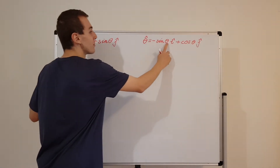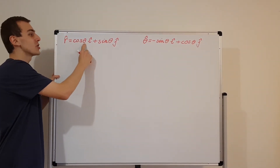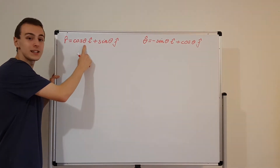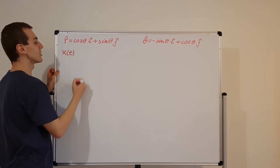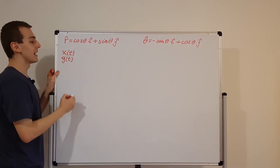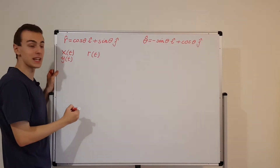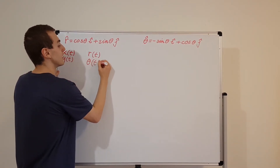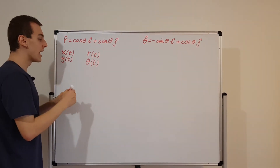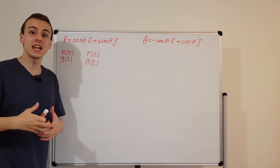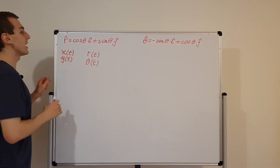Theta is the coordinate that depends on time, just as we have x(t) and y(t) in Cartesian coordinates. In polar coordinates we similarly have r(t), the radial distance from the origin, and theta(t). All of these coordinates can depend on time and therefore have time derivatives. Let's go ahead and differentiate r hat with respect to time.